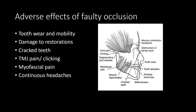What can be the adverse effects of faulty occlusion? Most commonly, it is tooth wear and mobility. Mobility results if the tooth wear stays uncorrected due to imbalanced forces acting on the teeth. Definitely, the restorations would be damaged. And if the forces are high, it can even lead to cracking of the teeth. These unbalanced forces can lead to joint pain, clicking, and even degenerative joint diseases. Since so much unbalanced force is present, the muscles will definitely be in tension, resulting in myofascial pain, and if left uncorrected, continuous headaches.